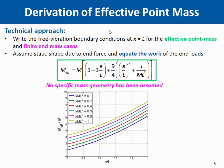This equation can be expressed generally in the sense that no specific geometry has been assumed. The figure represents the solution of this equation and enables us to identify the influence of each parameter — namely the eccentricity and the rotational inertia of the end mass — and also to calculate the error associated with the crude approximation of simply replacing an eccentric mass with a point mass at the end of the beam.